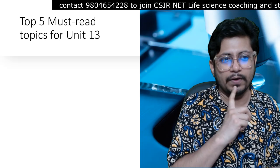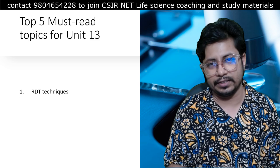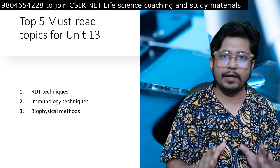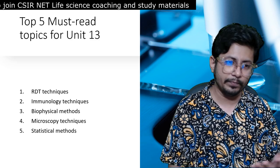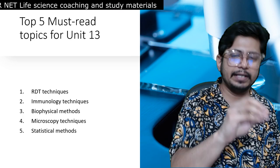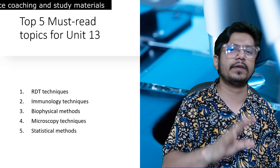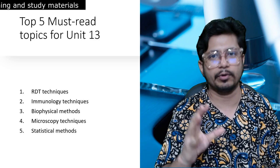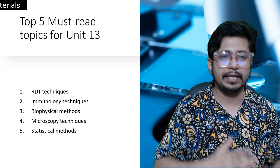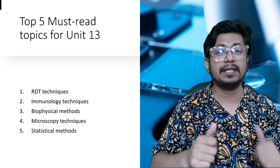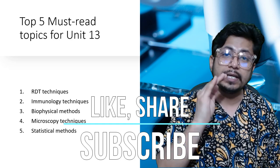The top five must-read topics for CSIR NET Unit 13 Biological Techniques are: first, Recombinant DNA Technology techniques; second, immunological assays and techniques; third, biophysical methods; fourth, microscopy techniques; and fifth, statistical methods. If you prepare these five topics across all units — 13 units times 5 topics equals 65 topics — you are going to answer more than 85 to 90 percent of questions. With a six-month preparation span and practice with question-answer series and online test series, you can get an excellent preparation.